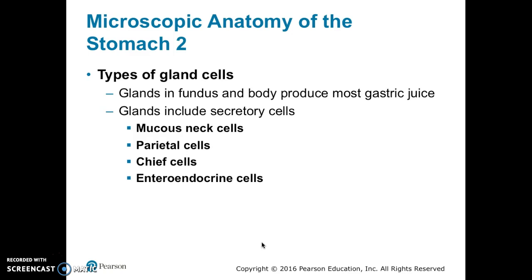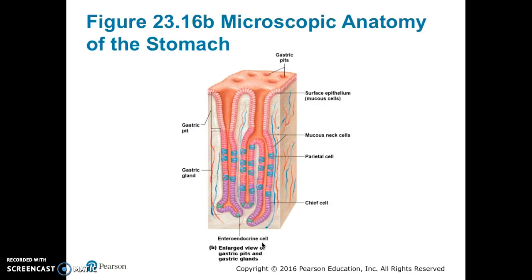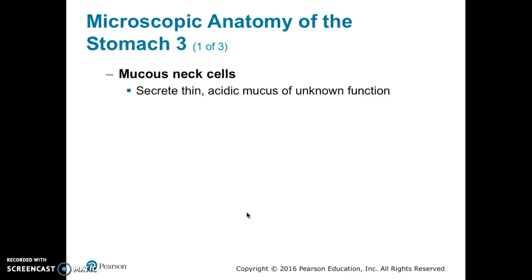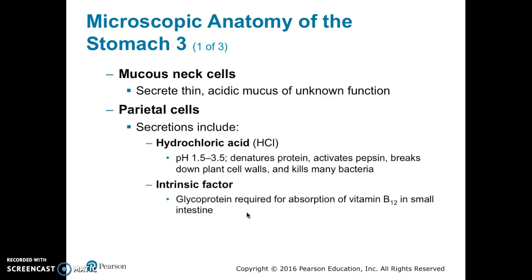The glands in the fundus and body of the stomach produce most of the gastric juice. The glands include secretory cells called mucous neck cells, parietal cells, chief cells, and enteroendocrine cells. In the diagram of gastric pits and gastric glands, the gastric pit is the beginning of the gastric gland. Mucous neck cells are followed by parietal cells interspersed throughout, then chief cells, and finally a few enteroendocrine cells at the end.